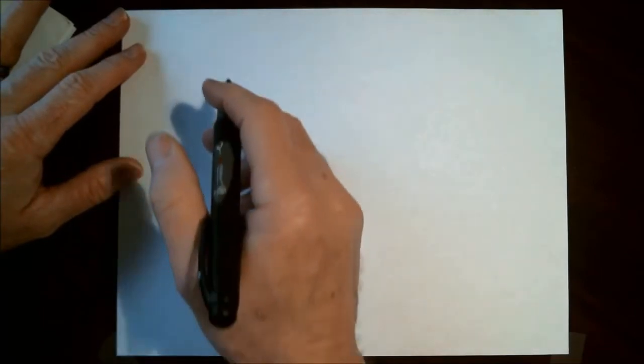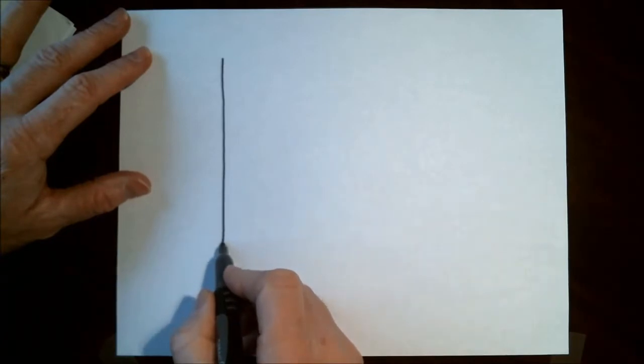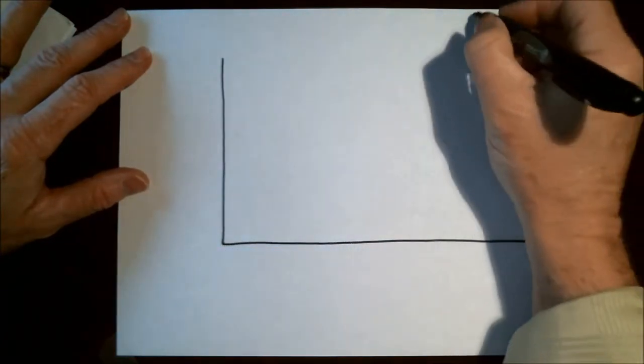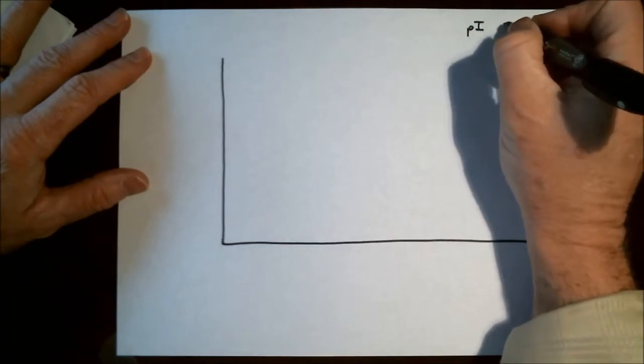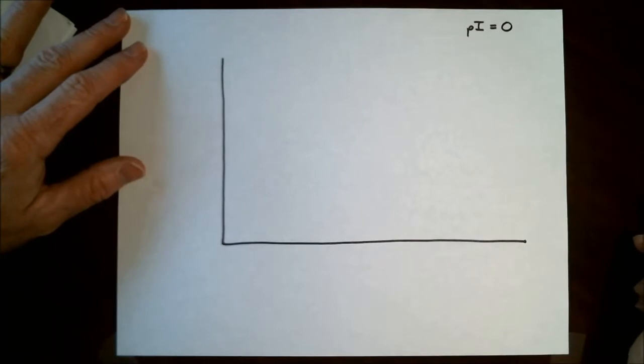So let's determine the isoelectric point of the amino acid aspartic acid, aspartate. And of course the isoelectric point, abbreviated as PI, is when the charge equals zero on the molecule.